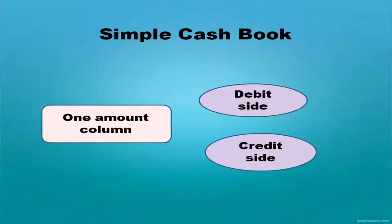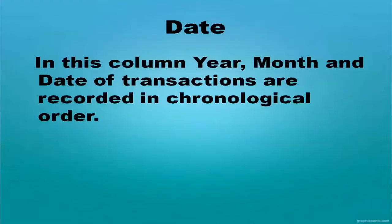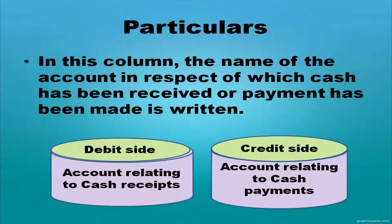In the simple cash book, only one amount column will be there — one on the debit side and another on the credit side. In the format of the cash book, we write the date with year, month, and date; transactions are recorded in chronological order. In the particulars column, the name of the account in respect of which cash has been received or payment has been made is written. Accounts relating to cash receipts are recorded on the debit side; accounts relating to cash payments are recorded on the credit side.